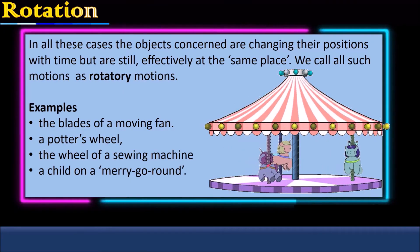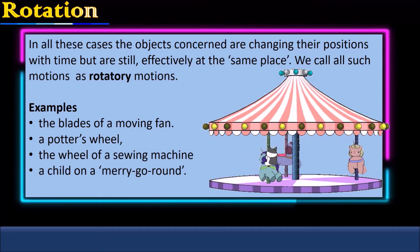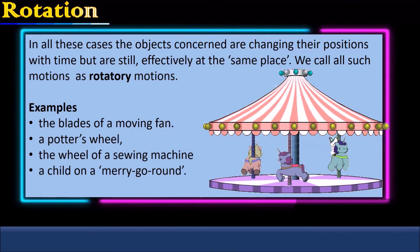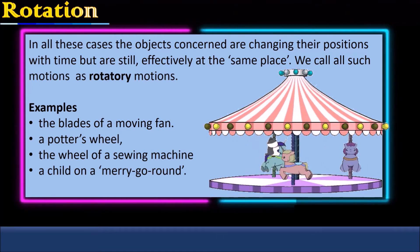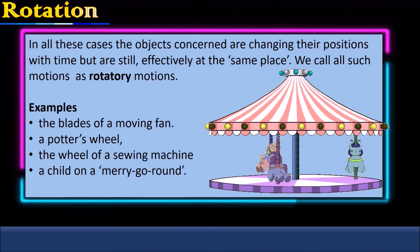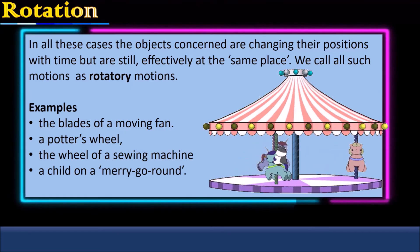In all these cases, the objects concerned are changing their positions with time but are still effectively at the same place. We call all such motions as rotatory motions.